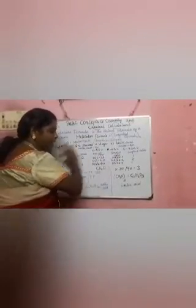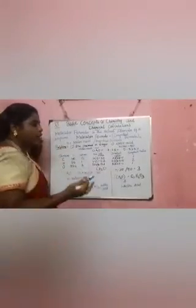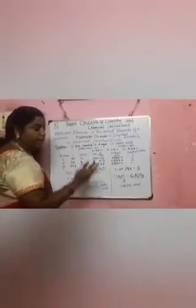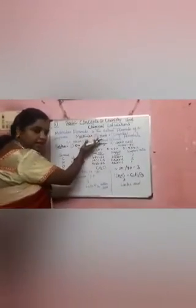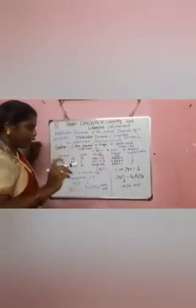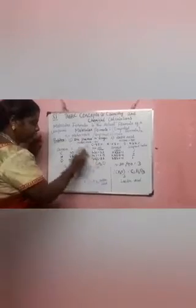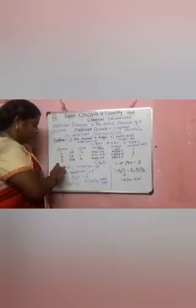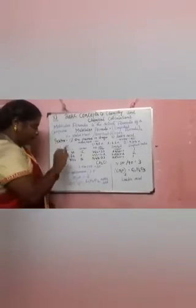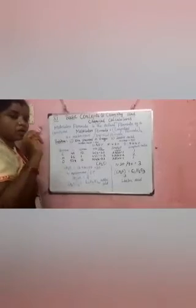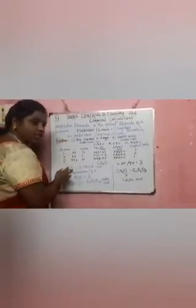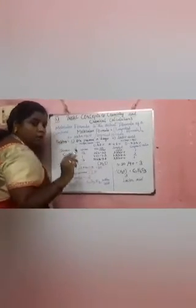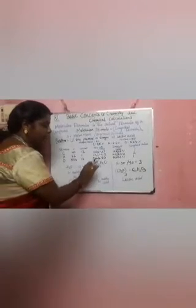CH₂O is the base empirical formula for both compounds. Now let's go individually for vinegar and lactic acid. For vinegar, first find the molecular mass of the empirical formula CH₂O: mass of carbon is 12, plus 2 hydrogens gives 2×1=2, plus oxygen is 16. Adding these: 12 + 2 + 16 = 30. So the empirical formula mass of CH₂O is 30.